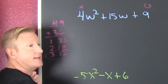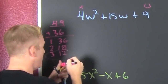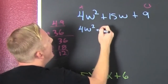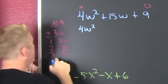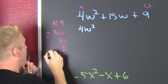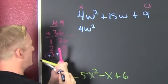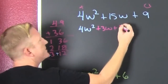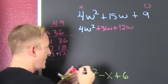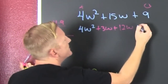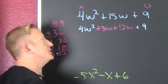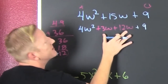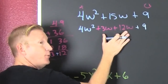So I can stop my factorization. I rewrite that 4w squared. The signs are the same and they're both positive, so that's plus 3w plus 12w, and then plus that 9. We rewrote 15w as 3w and 12w.